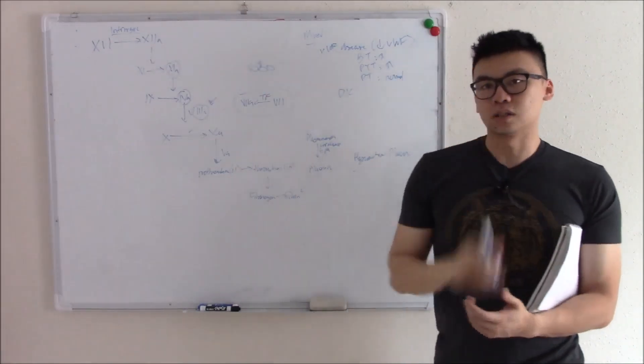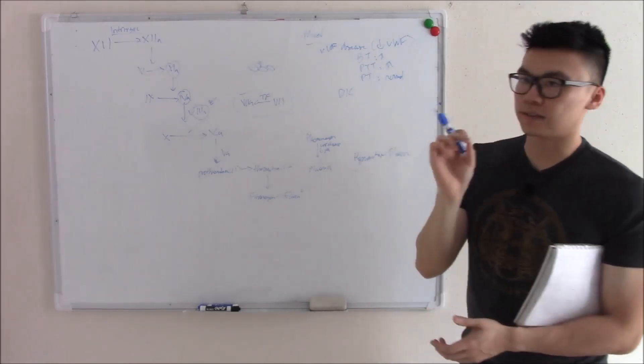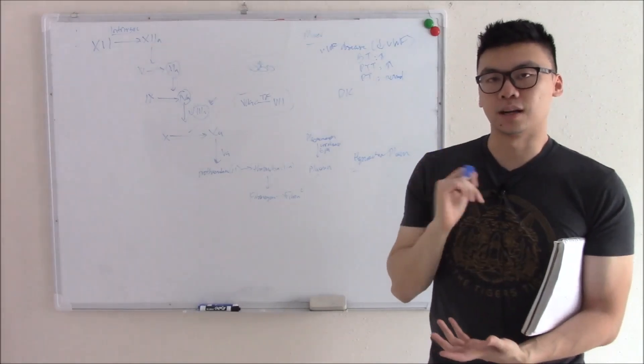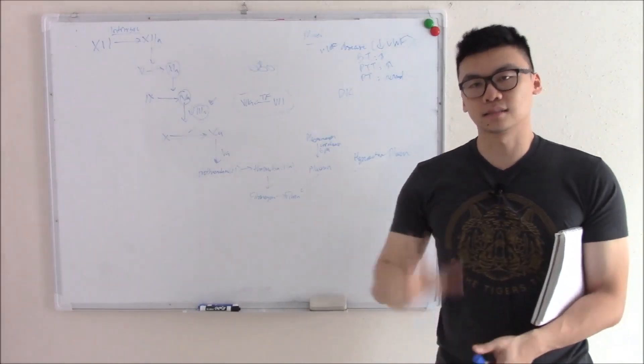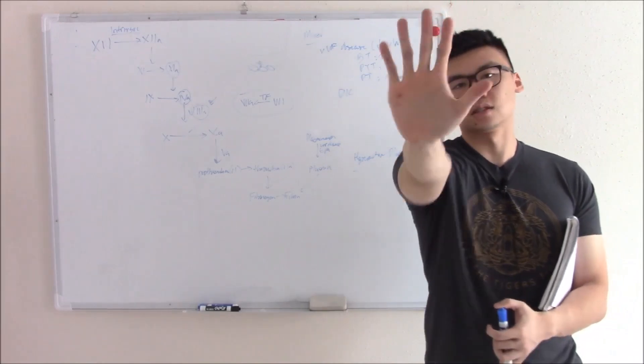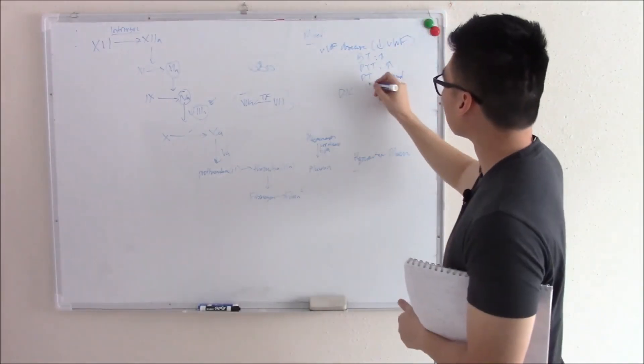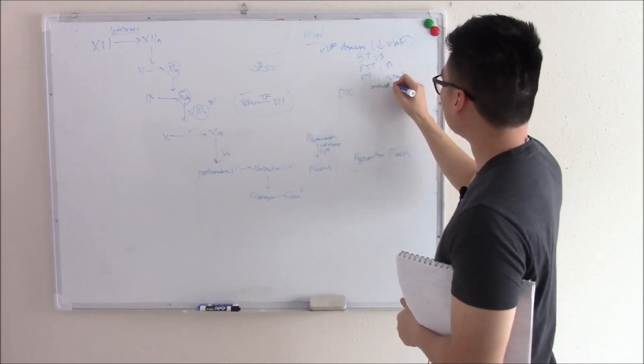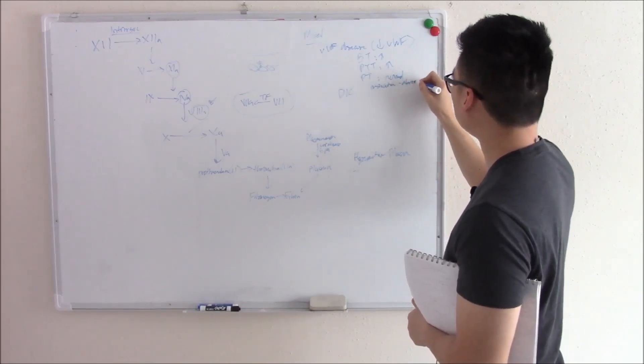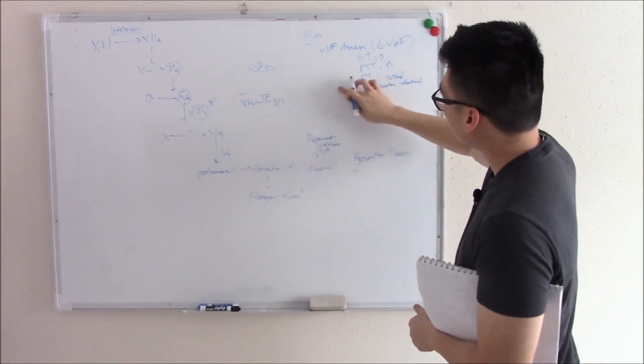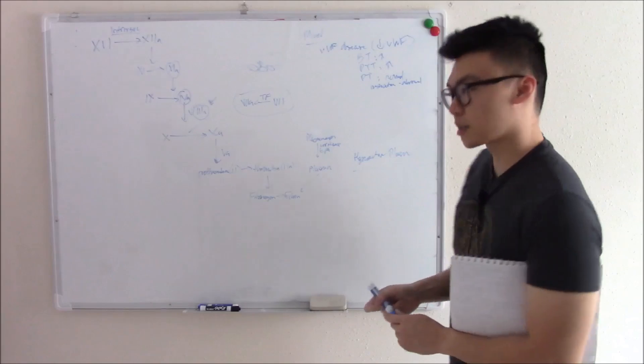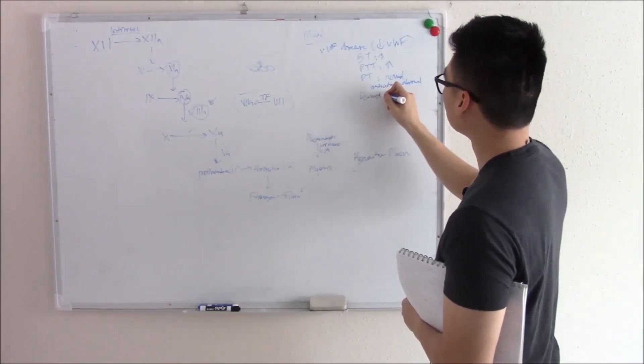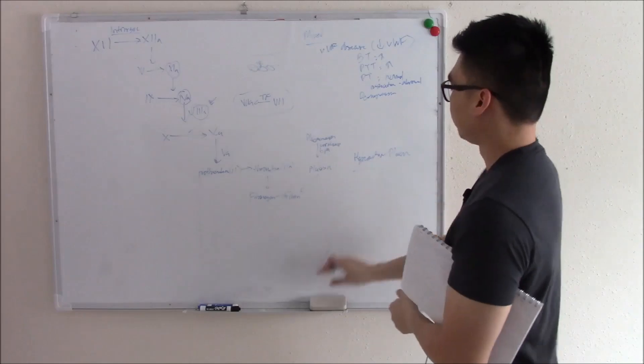Now, just for bonus points, what is the most specific test we can test for in disorders with von Willebrand factor and its binding? If you say Ristocetin test, high five. High five me through the screen. You're absolutely right. So Ristocetin will be abnormal. That's kind of a dead giveaway. How do you treat it? You can increase von Willebrand factor. We just talked about a drug that does that. That'd be your desmopressin.